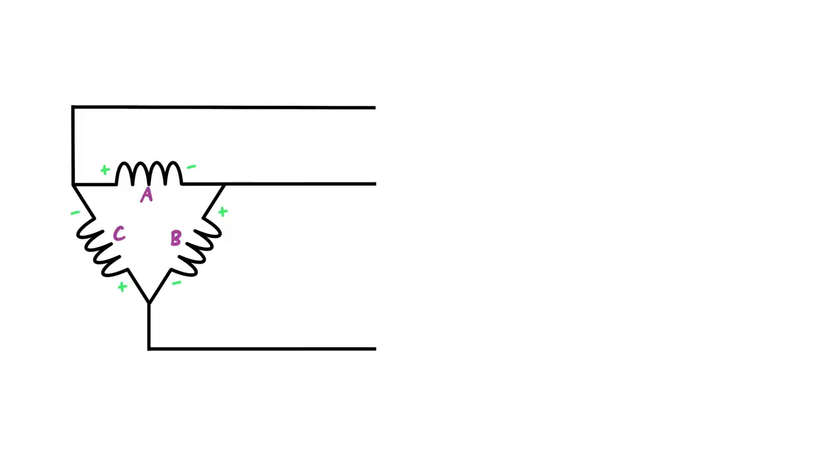Instantaneous polarity. Again, as I said in my Y configuration video, I understand that these are not all going to be happening at the same time. They happen 120 degrees out of phase with one another. But for the purposes of our video and for the explanation for now, we're just going to say that we're going to stop time and say that this point is negative, that's positive, negative, positive, negative, positive.